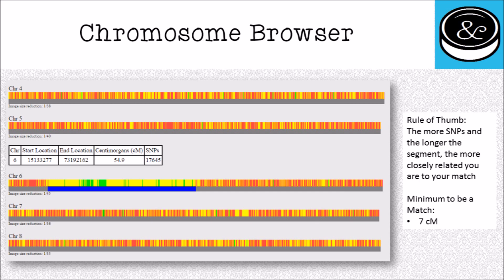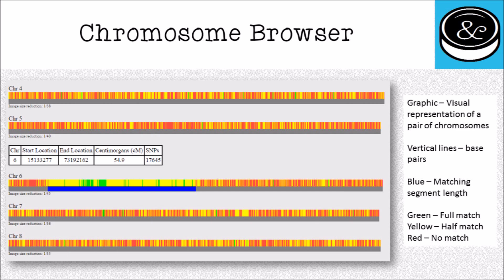The way that we see that play out on a chromosome browser: you can see that this is a match from GEDmatch.com. This is my match to another gentleman on that website, and he and I match together on chromosome number six. This blue section right here indicates a matching segment between me and this person. You can see that my match to this gentleman is 54.9 centimorgans long. This is a really, really good match, and I can judge that based on not only the length of the segment, but the number of SNPs and mutations on that segment. This is 54 centimorgans with over 17,000 SNPs.